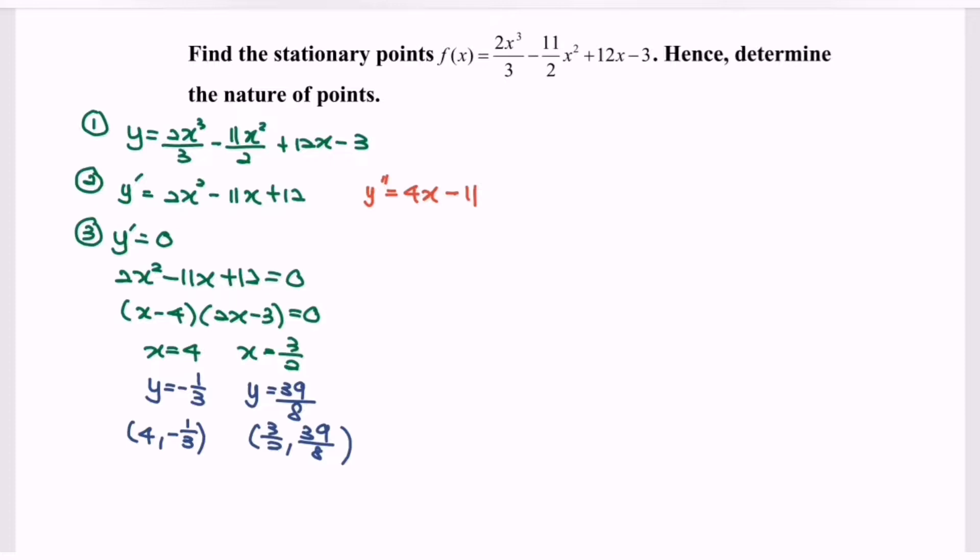So next step, what we have to do is test the value, or we can say substitute the value of x into the second derivative. So where we will have f double prime of 4 and f double prime of 3 over 2. If we substitute the value 4 into the second derivative function, we will have 5, which is greater than 0. So meaning that x equals 4 is a minimum value, or we can say the point 4 comma negative 1 over 3 is a minimum point.